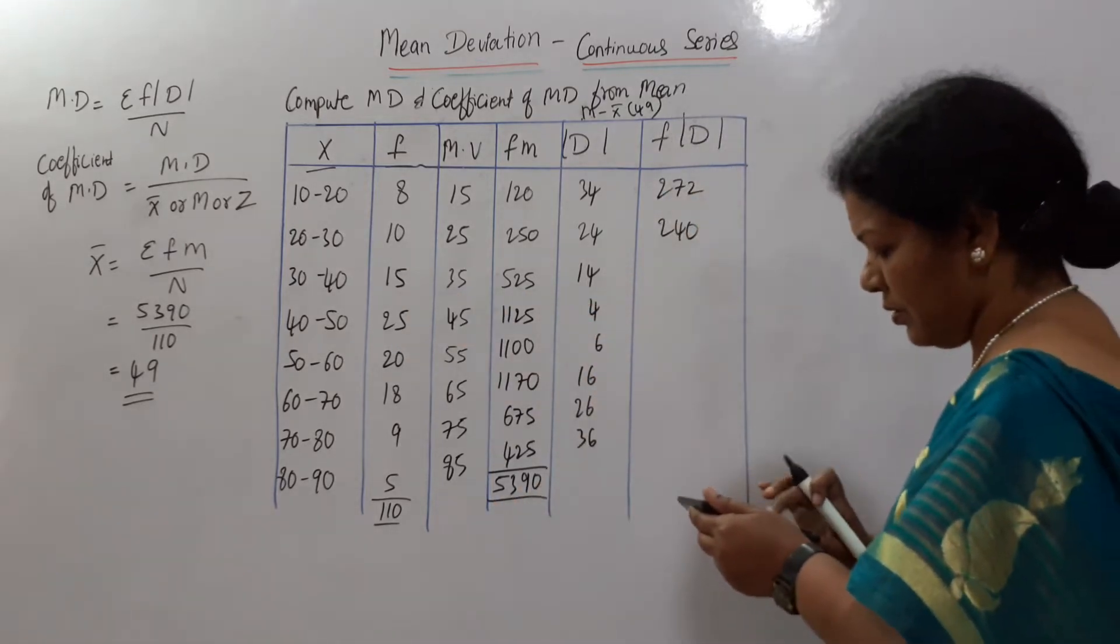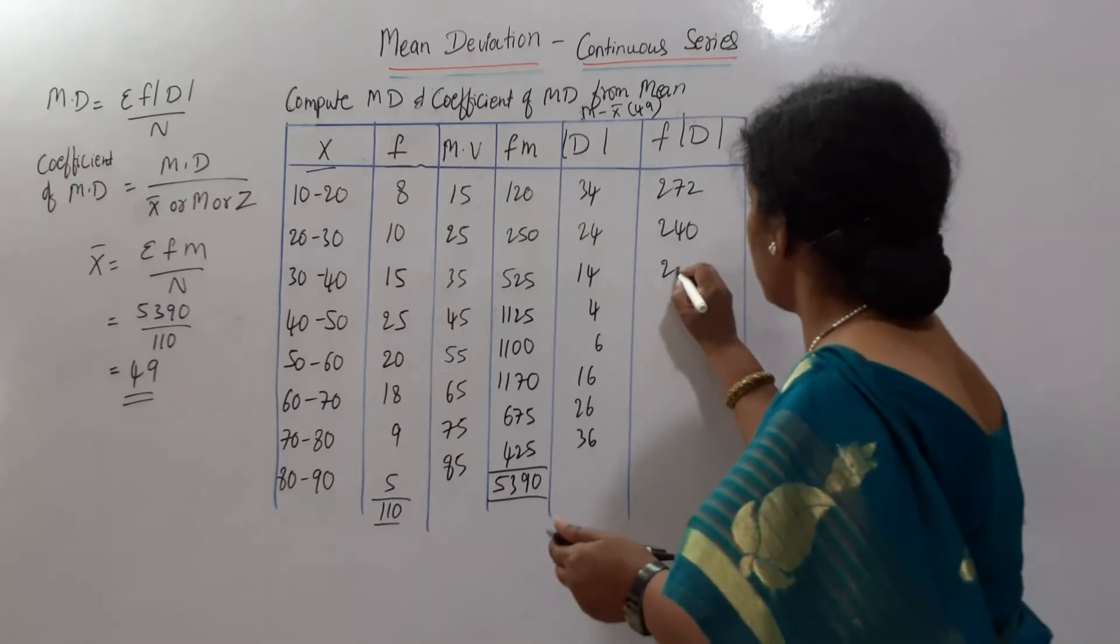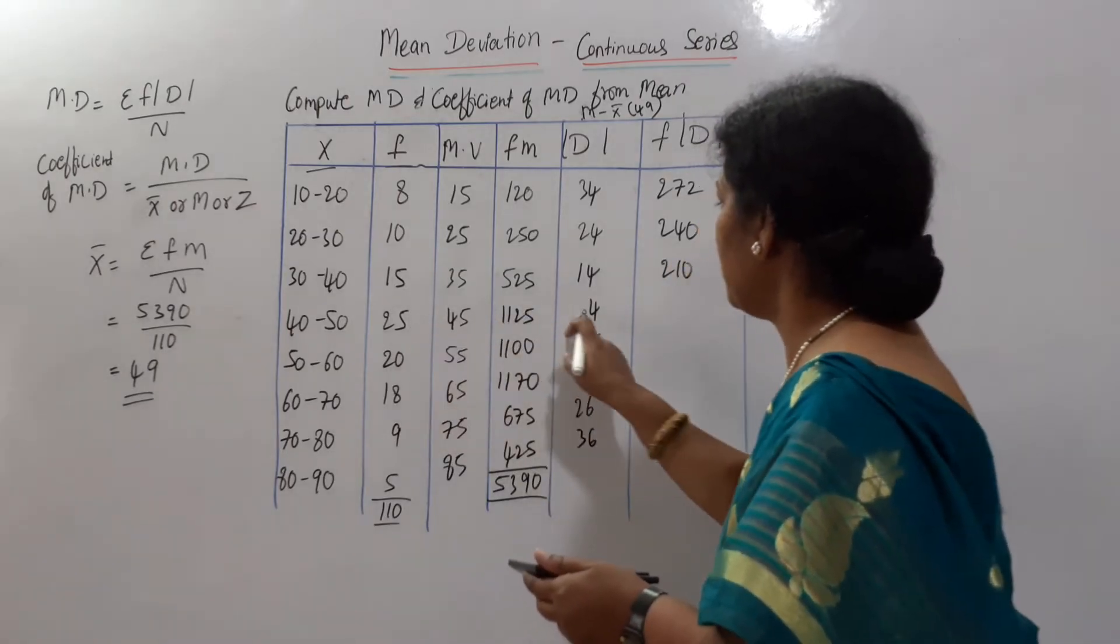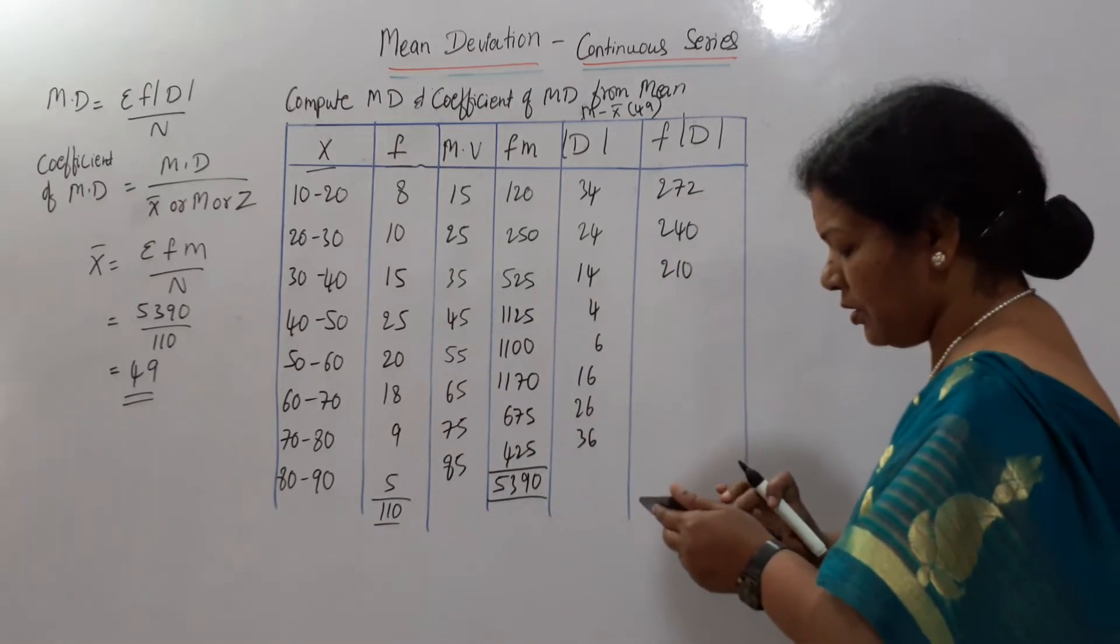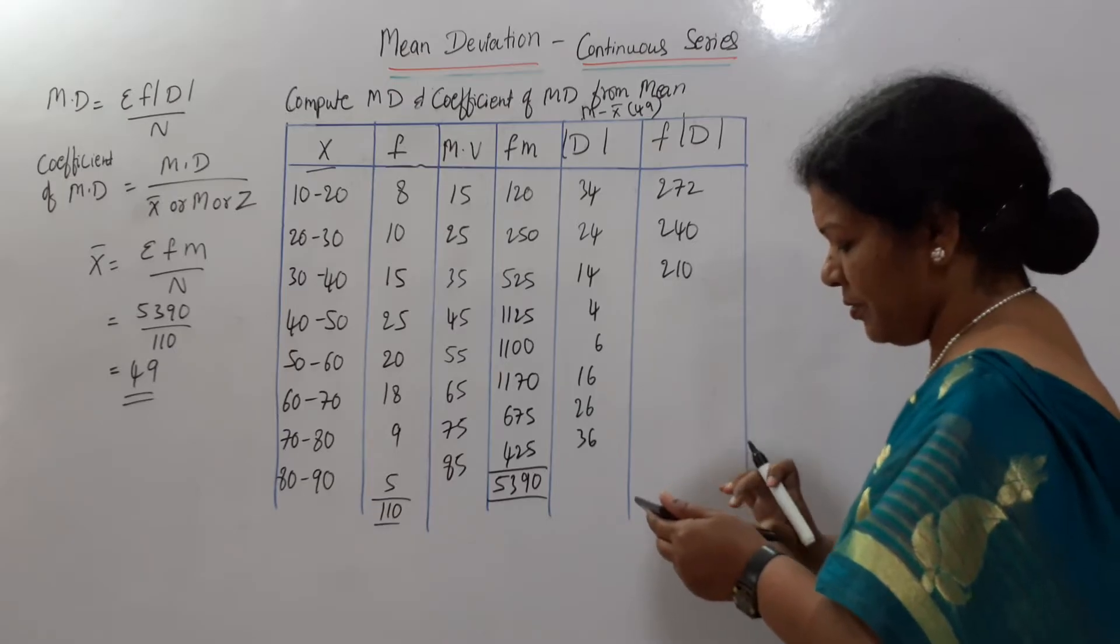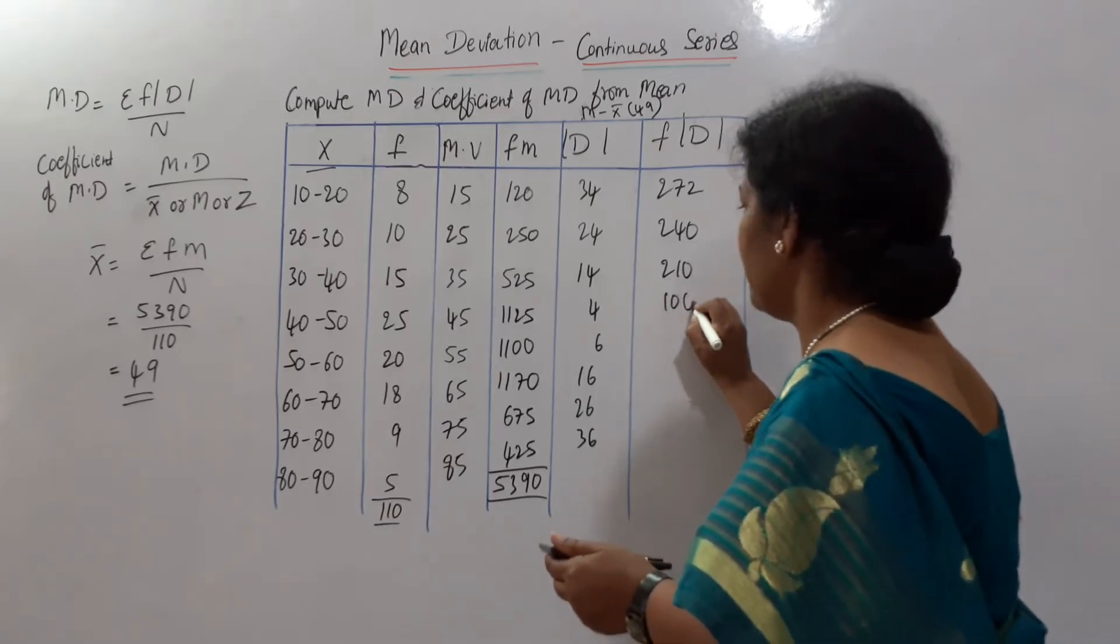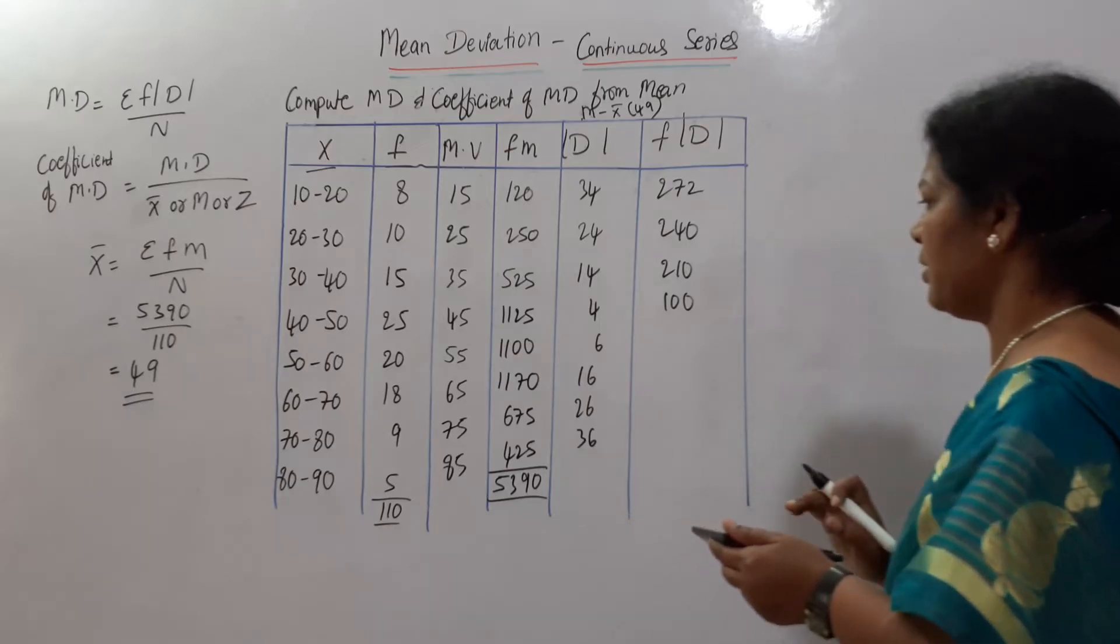Next 15 into 14, 210. 25 into 4, 100. Next 20 into 6, 120.